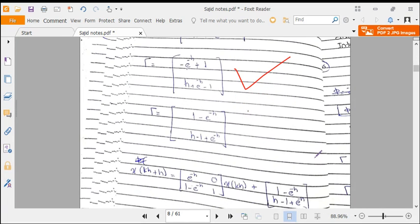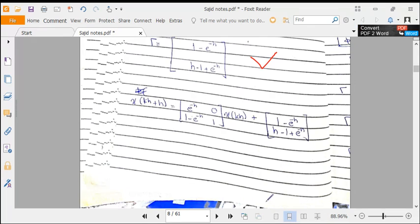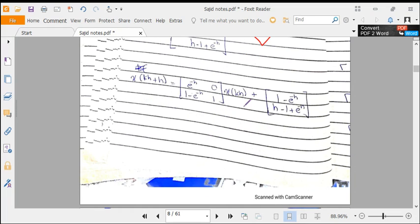So we have found phi and gamma. Now we have to just plug this into our discrete time system equation of the sample data system. The equation would be x(kh + h) equals - this is our phi that we just calculated - times x(kh) plus gamma times u(kh).